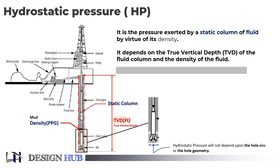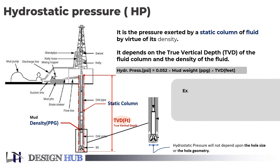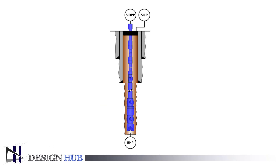This is the formula to calculate hydrostatic pressure. Let's calculate: mud weight is 10 ppg and well depth is 10,000 feet. So the hydrostatic pressure will be 5,200 psi.